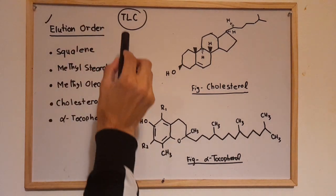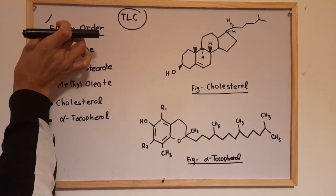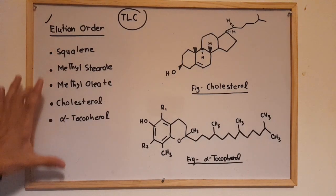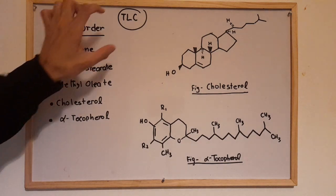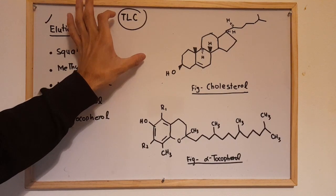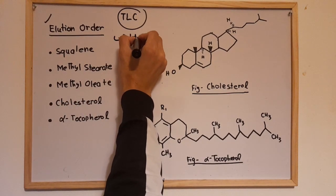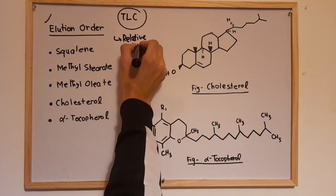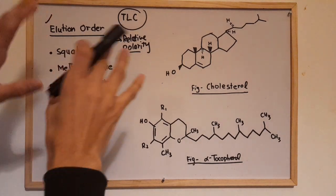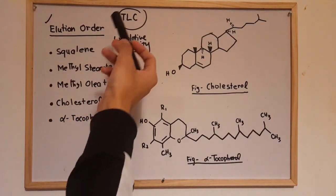Welcome to our channel. Today we will be discussing TLC — thin layer chromatography — and particularly the elution order in TLC. We have five components whose elution order we will discuss. TLC is a separation technique in which the components of a mixture are separated depending upon their relative polarity, using a stationary phase and a mobile phase.